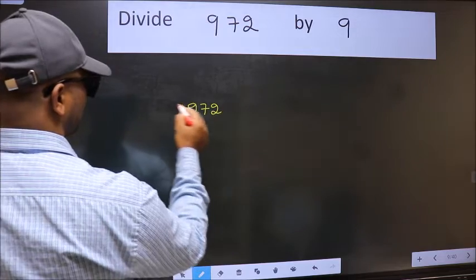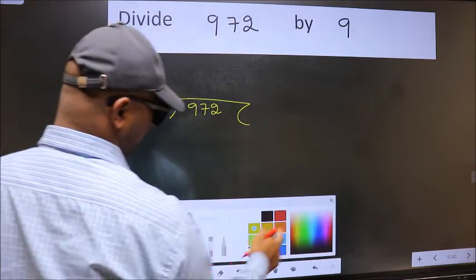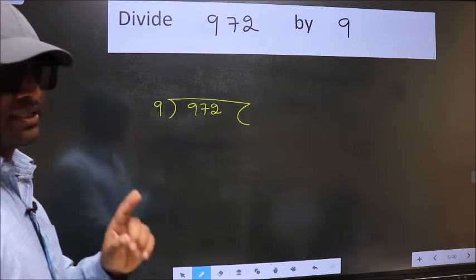972 here and 9 here. This is your step 1.